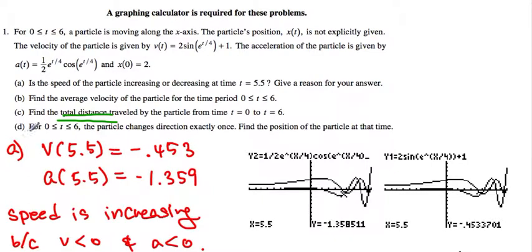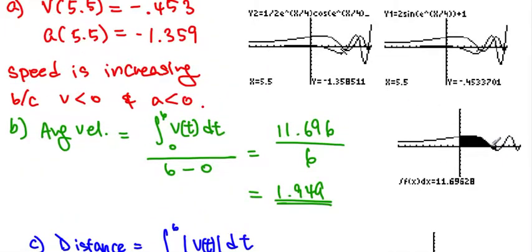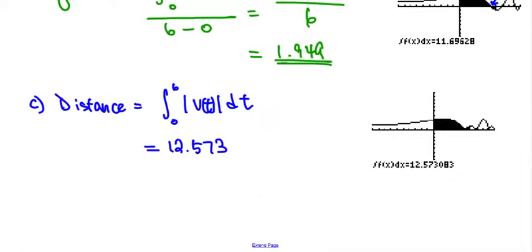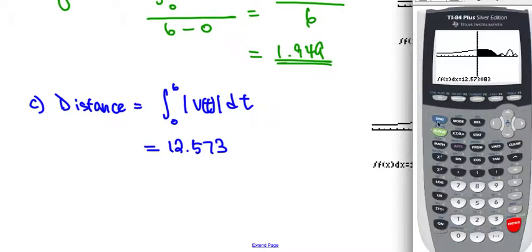Now, number D. From 0 through 6, the particle changing the direction exactly once. Changing the direction, that simply means first velocity from positive to negative, or negative to positive. Find the position. Find the position of the particle at the time. So, from even as you can see from here, that's the point which we are looking at. So, what we would like to do is we would like to go back to the calculator and find the time first.